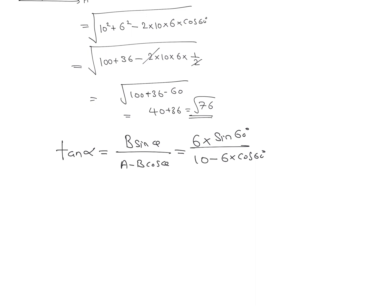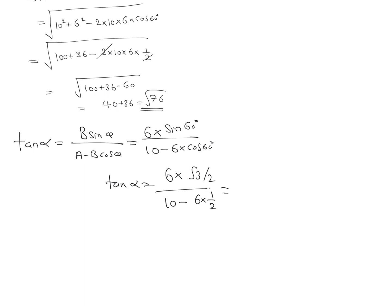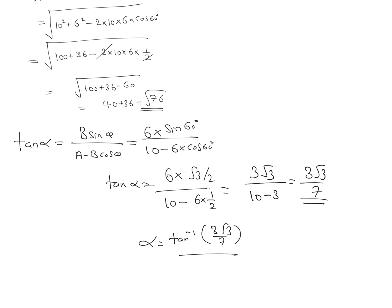Putting in the values: tan alpha equals 6 into sin 60 which is root 3 over 2, divided by 10 minus 6 into cos 60 which is 1/2. The 6 and 2 cancel to give 3 root 3, divided by 10 minus 3 which is 7. So tan alpha equals 3 root 3 over 7, and alpha equals tan inverse of 3 root 3 divided by 7.